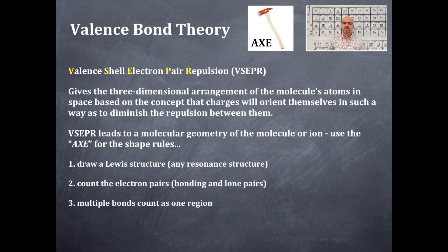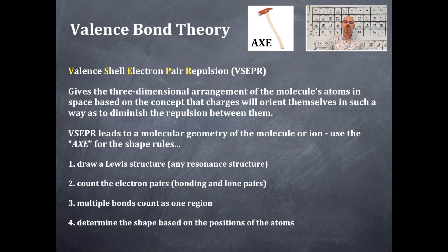Multiple bonds, that's number three, count as one particular region. It doesn't matter if it's a double bond or a triple bond, that's still a domain, a single domain around the central atom. Number four is we're going to determine the shape based on the positions of the atoms and moving them as far away as possible three-dimensionally.